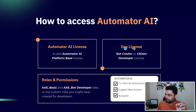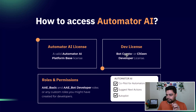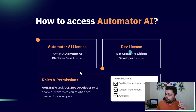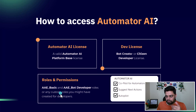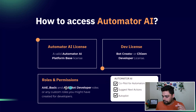On top of that, you need a developer license. A developer license is a bot creator license or a citizen developer license, which is available as part of your control room and can be enabled from there. For roles and permissions, you need a basic or a bot developer role. In case you have created any custom role for your developers, that would be your custom role where you enable these permissions.